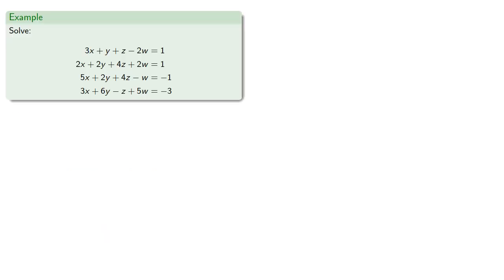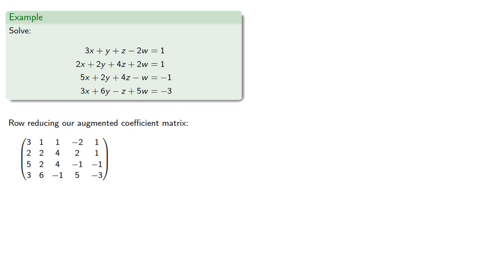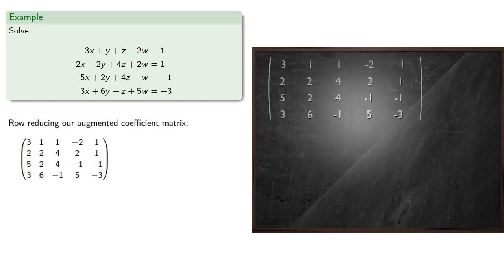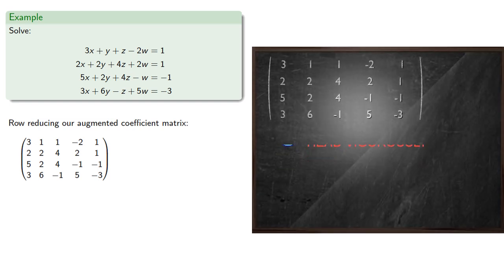For example, let's try to solve this system of equations. We'll write the augmented coefficient matrix. In the first row, the leading coefficient is 3, which we can use to reduce the entries in the third and fourth rows.